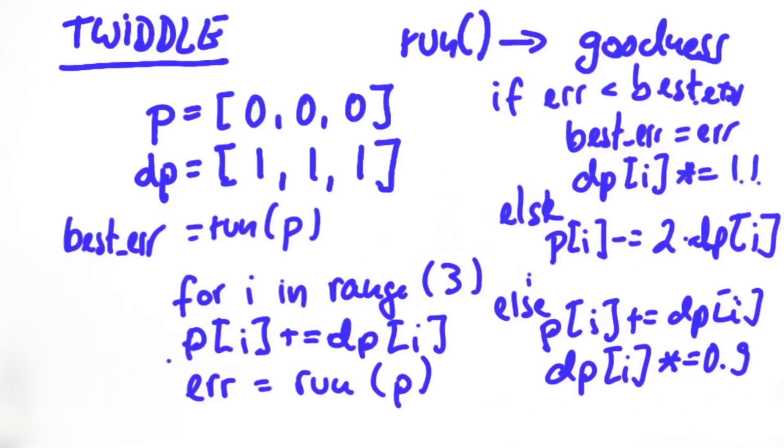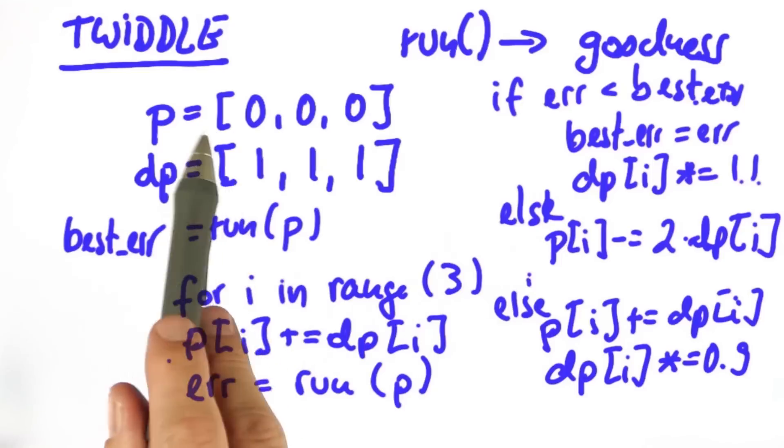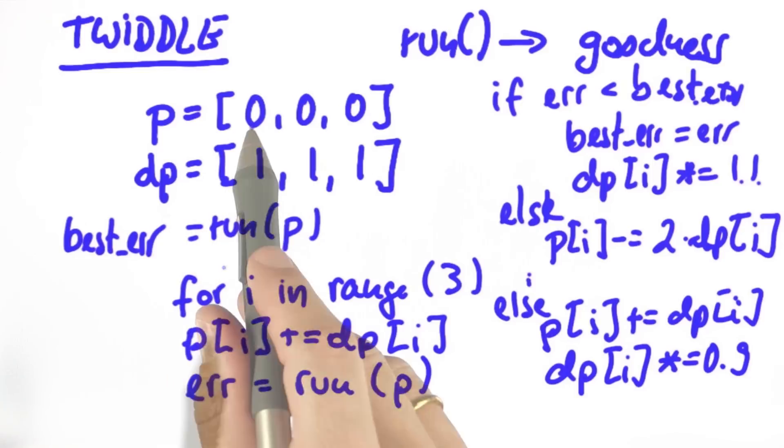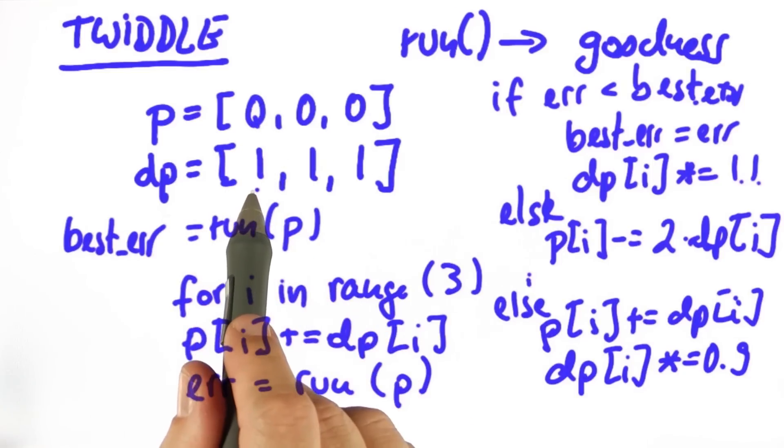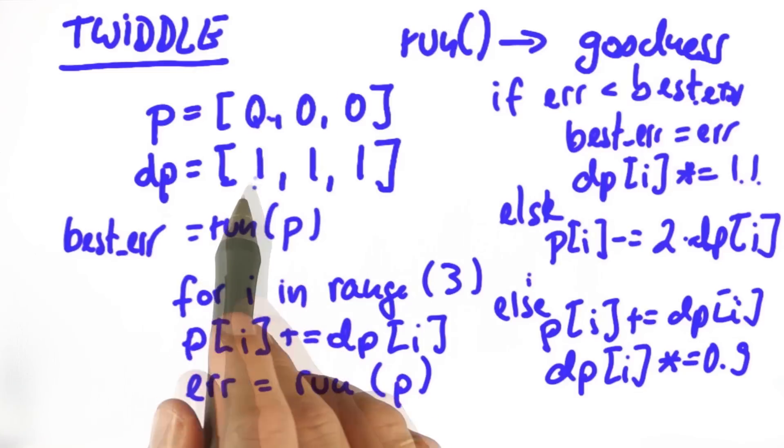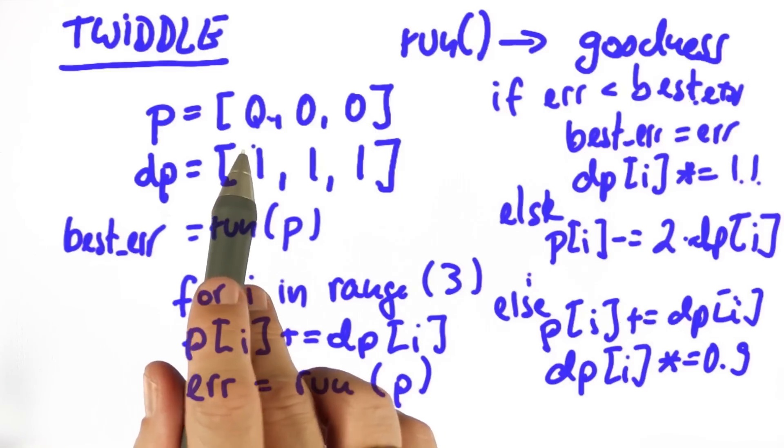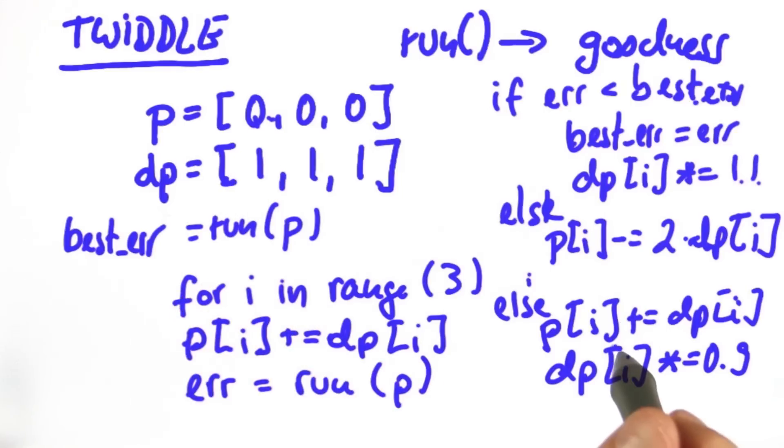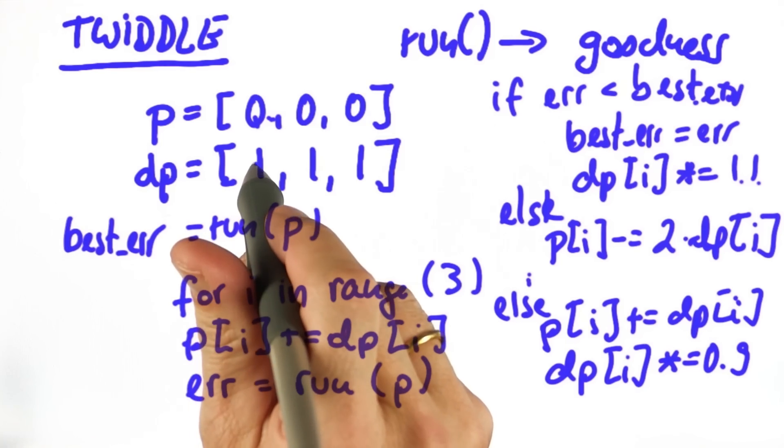That's the core of Twiddle. And what it really does is for each coordinate in isolation, it moves our parameter up or down a little bit by this value over here. If it then finds a better solution, it retains it and even increments the probing interval. But if it fails to find a better solution, it goes back to the original and decreases our probing interval.